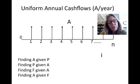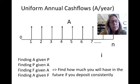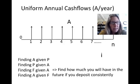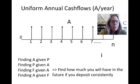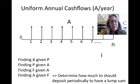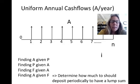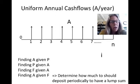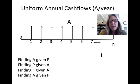We can also find the future value given equal annual payments — for example, if you deposit $100 every month, how much will you have at the end of a certain time period? The other direction is finding A given F: if you want a lump sum at the end, how much should you deposit each year to reach that amount?